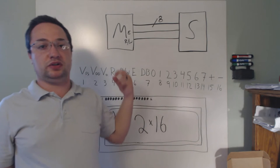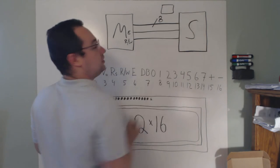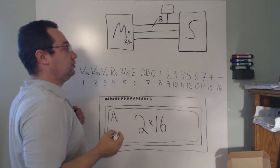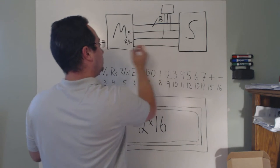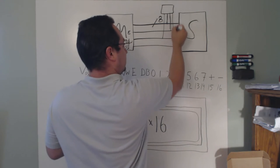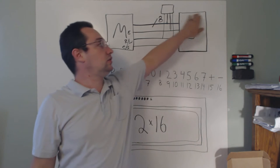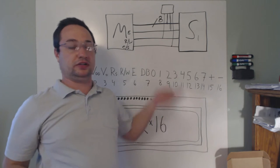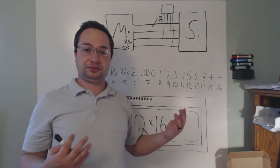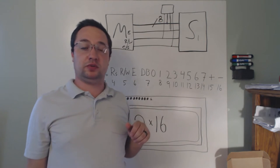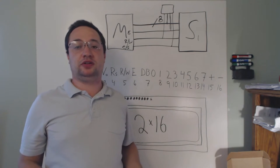Something else interesting about this bus is you can have multiple slaves on it. Another slave can connect to the same 8-bit bus, the same enable line, and the same read/write line. You add one more line: the chip select line. If the chip select line is held low, slave number one will respond; if the line is held high, slave number two will respond. That's the basic idea of a parallel bus.